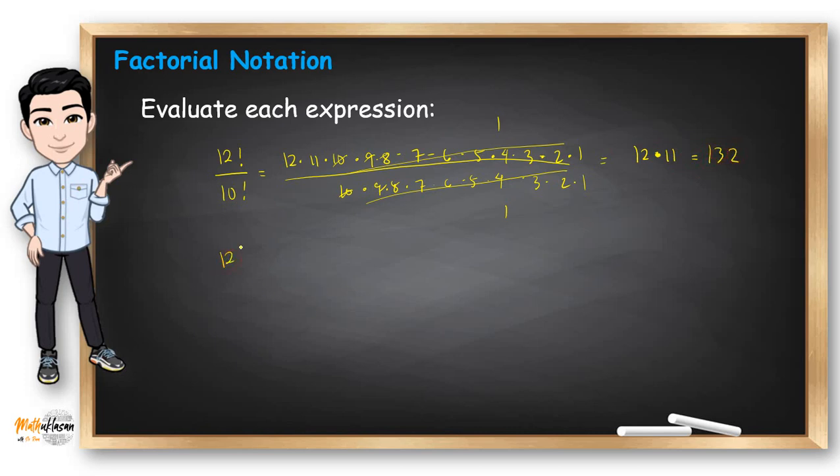From the shortcut we just made, we can have an alternative solution. For this case, if you have 12 factorial, you separate 12, 11, and 10 factorial here, divided by 10 factorial, to get 12 times 11, which is 132.